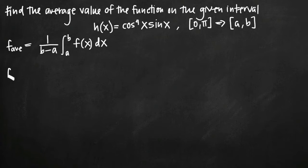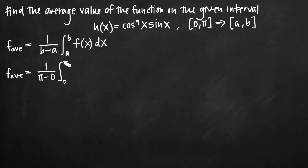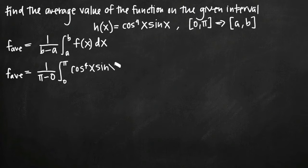The average value of this function will be 1 divided by b minus a. In our case, b is pi and a is 0, so we get 1 over pi minus 0, times the integral from 0 to pi. We go ahead and plug in our function for f of x, giving us cosine to the fourth of x times sine of x dx. Now it's just a matter of evaluating this integral.